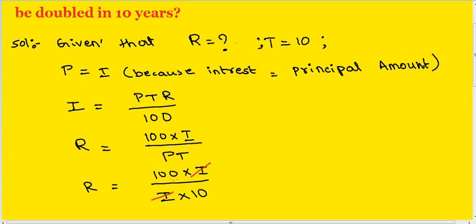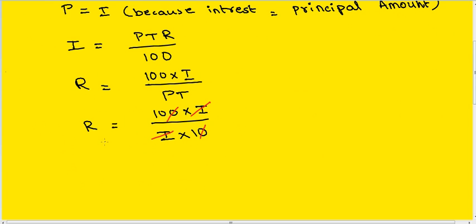Here, I cancel, 10, 10 cancel. So interest rate R = 10%.